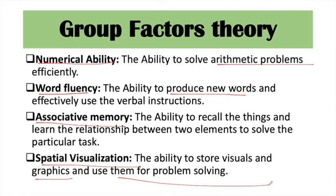These seven abilities define the intelligence level. It is not necessary that all seven abilities will be equally high — some proportions can be more and some can be less in different individuals.